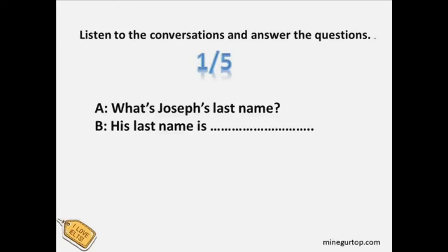Part 2: Getting to Know Each Other. Exercise 1: What is his name? Listen to the conversations and answer the questions. 1. Hi Linda, I'm Joseph Miller. Everyone calls me Joe. Nice to meet you, Joe. And what's your last name again? It's Miller. It is spelled M, I, L, L, E, R. Thanks.